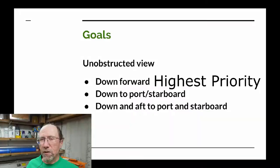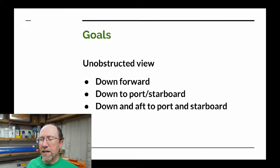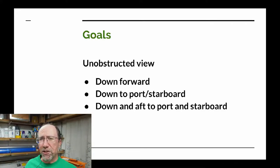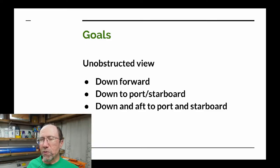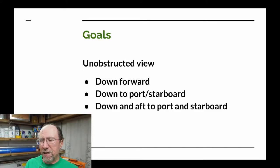As a quick review for the unobstructed view goal: highest priority is down and forward; next priority is down to port and down to starboard — down to the left and down to the right. A little bit less important, but still desirable for the recreational flying we want to do, is down aft to the left and down aft to the right.